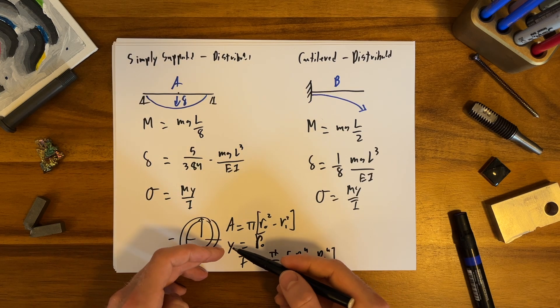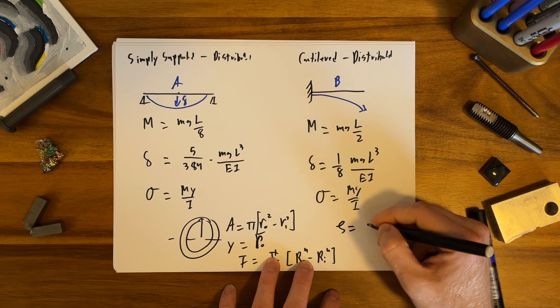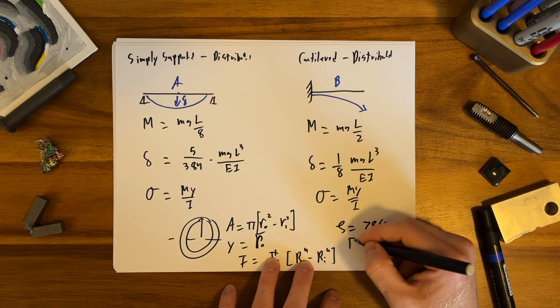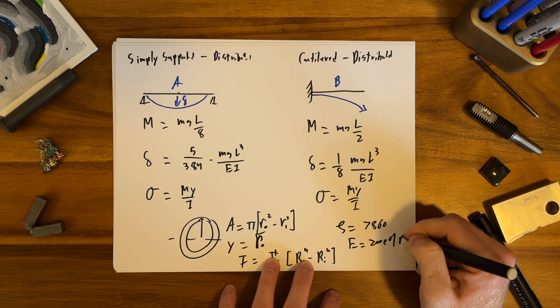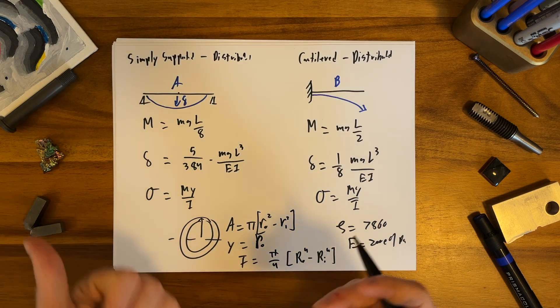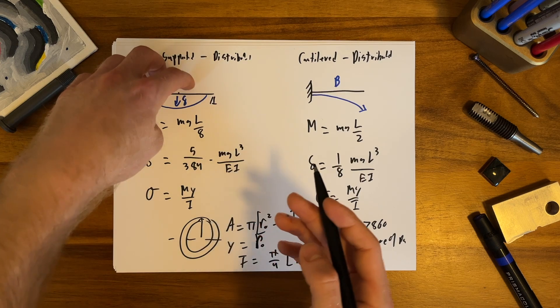I assume steel so I said ρ equals 7860, that's my density, and the modulus is 209 GPa. You can figure out with this much cross-sectional area, that much density, and this much length, here's the mass of the beam in this area. Therefore I know my weights, I know my moments, I know my deflections.